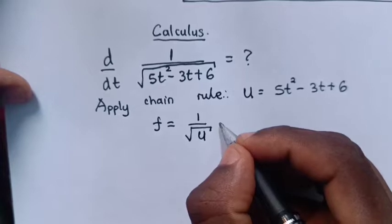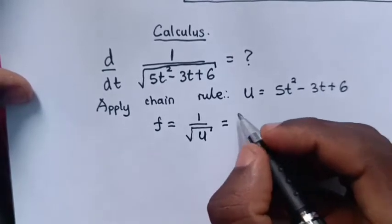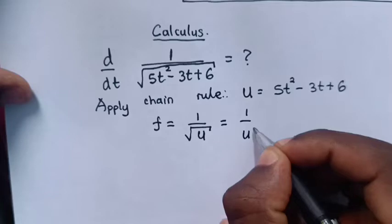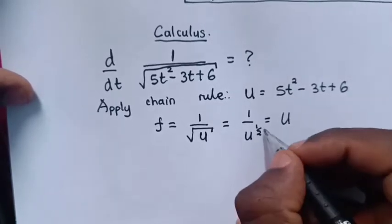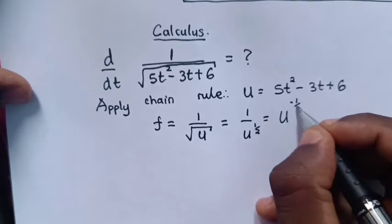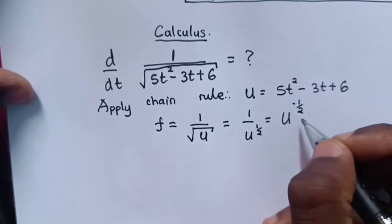It's equal to 1 over u, square root is power of a half. It's equal to u^(-1/2).